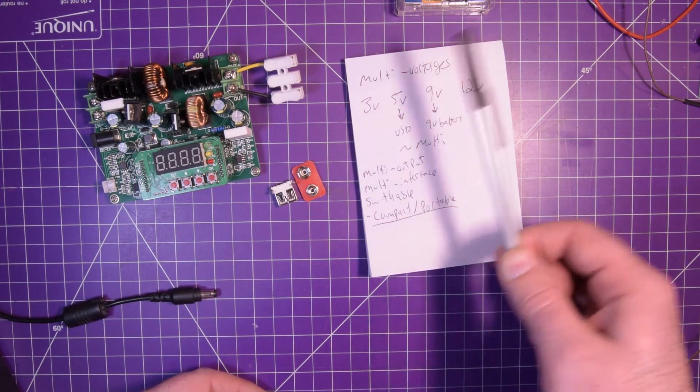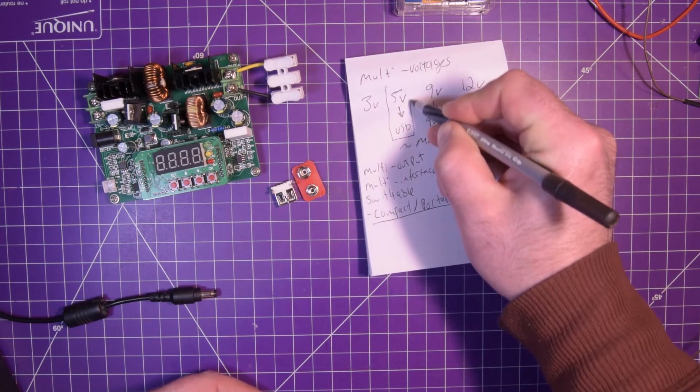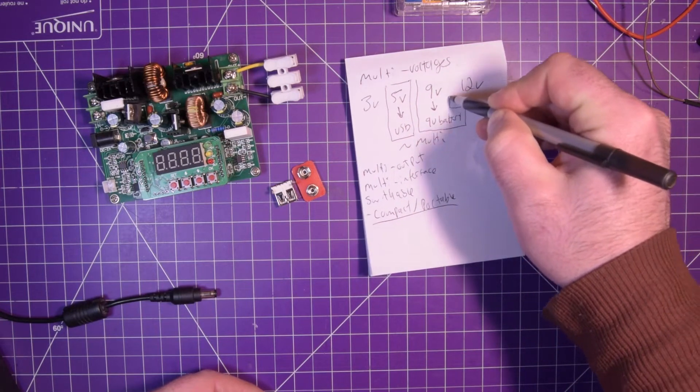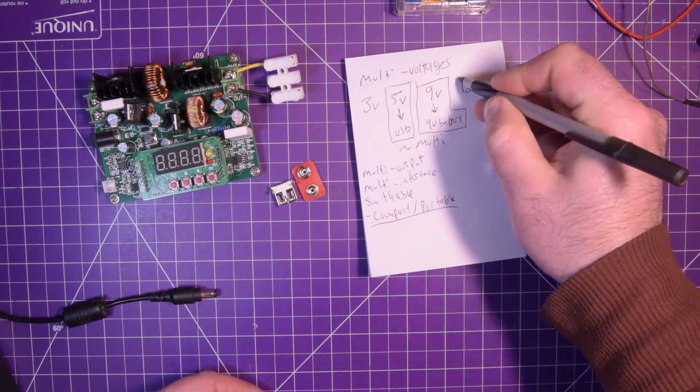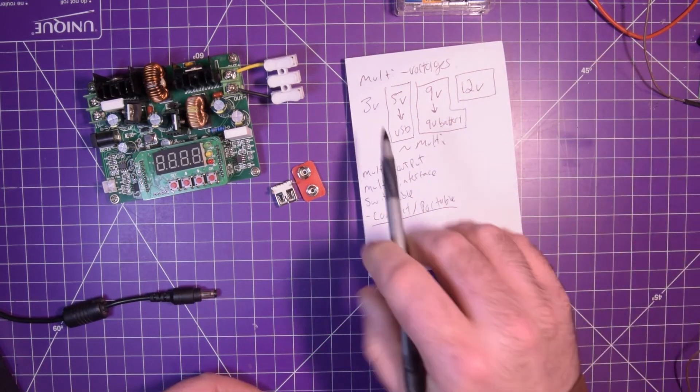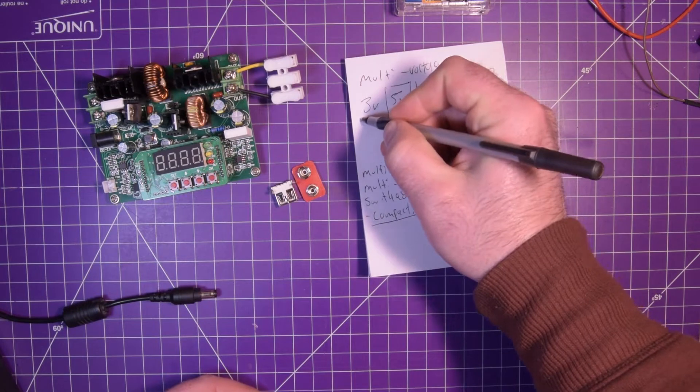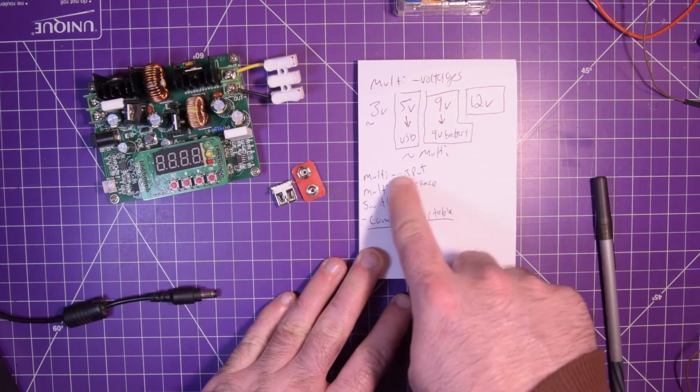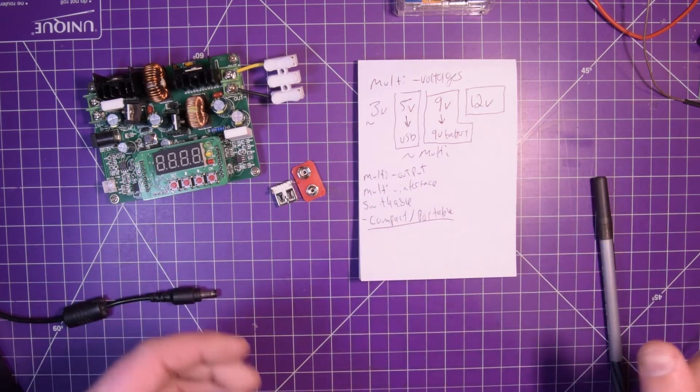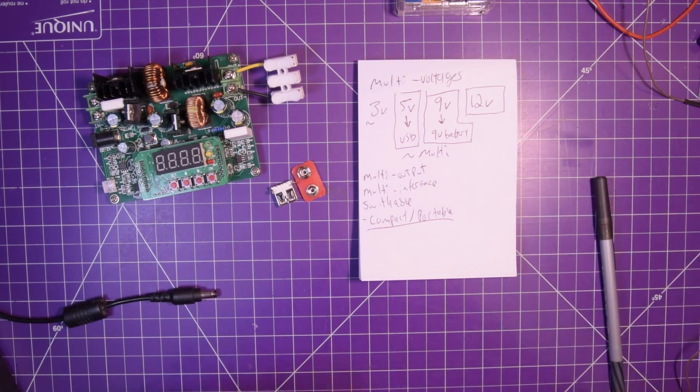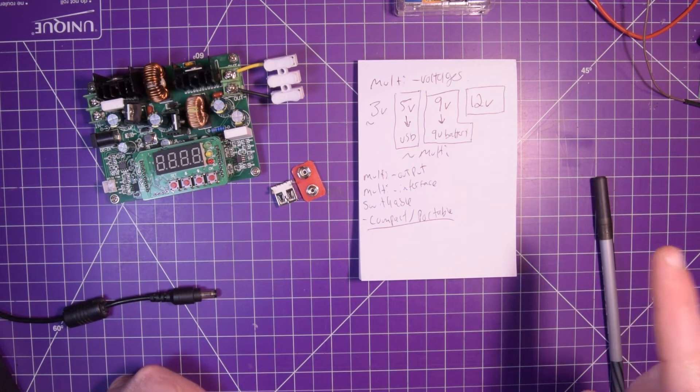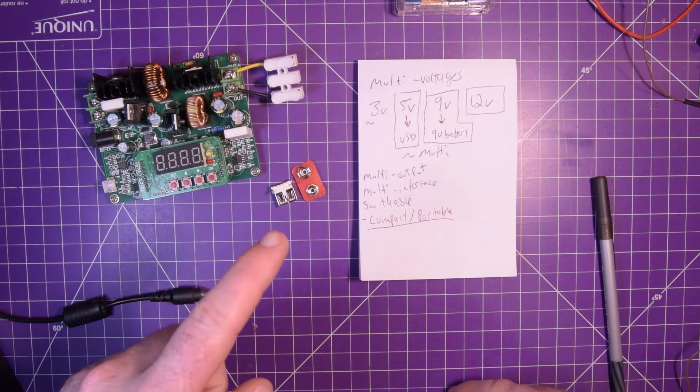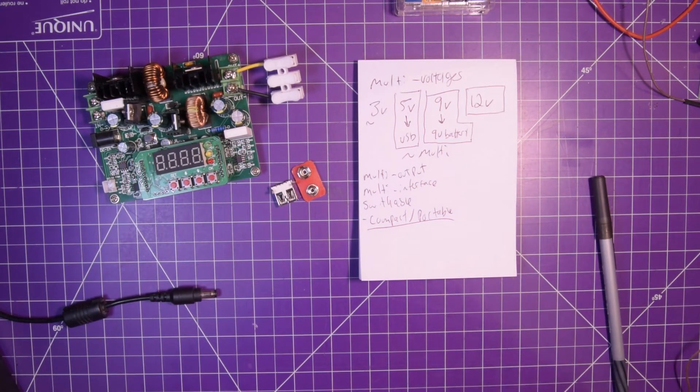Compact because we don't have that much space - my workbench doesn't actually go much further than the frame of the camera. So it can't take up much space. Portable because this could be useful in other locales. So my requirements are definitely 5 volt with a USB socket, 9 volt with a 9 volt battery connection, 12 volt would be fantastic. These things are really what I want - the multi-output, multi-interface, switchable, compact and portable. Let's look around for the parts I have and see if we can prototype something.